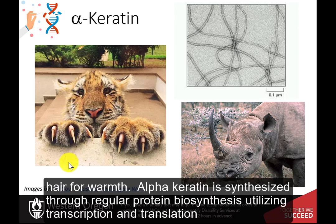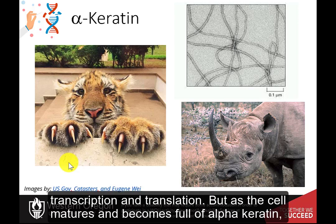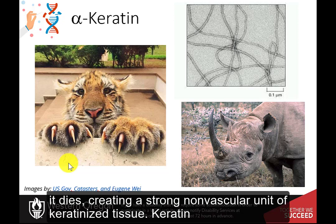Alpha-keratin is synthesized through regular protein biosynthesis, utilizing transcription and translation. But as the cell matures and becomes full of alpha-keratin, it dies, creating a strong non-vascular unit of keratinized tissue.